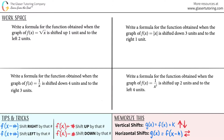Write a formula for the function obtained when the graph of f(x) equals the square root of x is shifted up one unit and to the left two units.